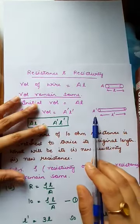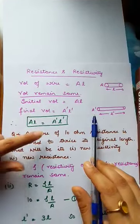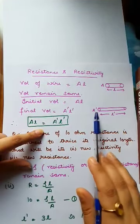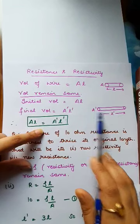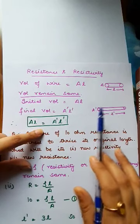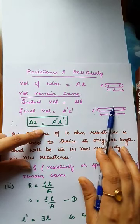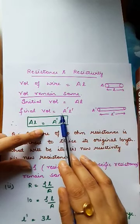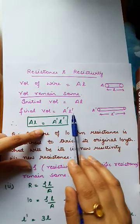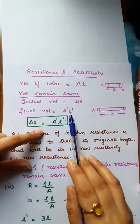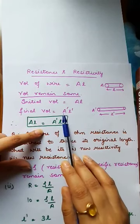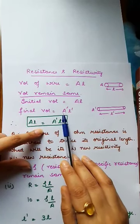When we stretch the wire and the length increases, the area of cross section will decrease. If both dimensions change — length increases and area decreases — the volume remains the same.